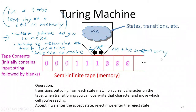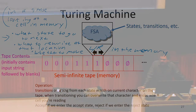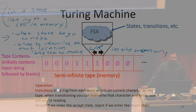That's all a Turing machine does. It looks at its current state and what it's currently reading in memory, then uses that information to change to a different state, possibly overwrite what it was currently looking at in memory, and then move either left or right in the memory.